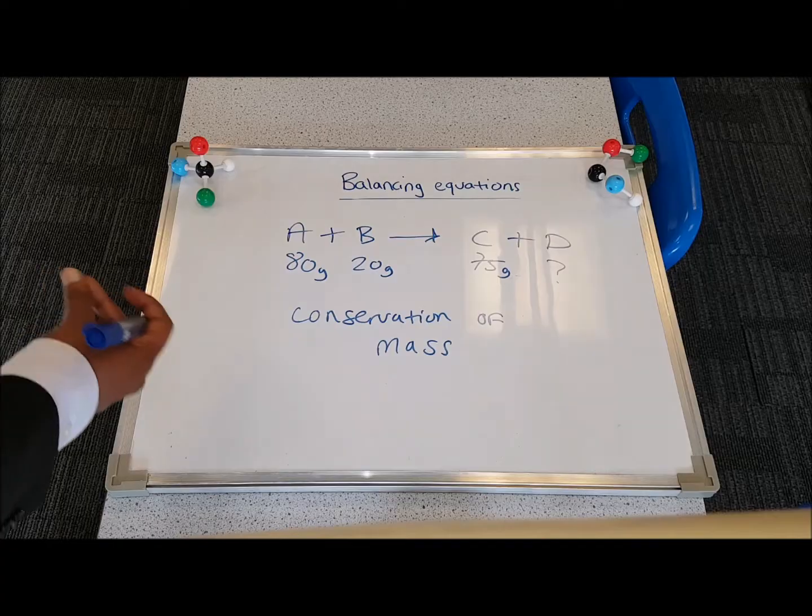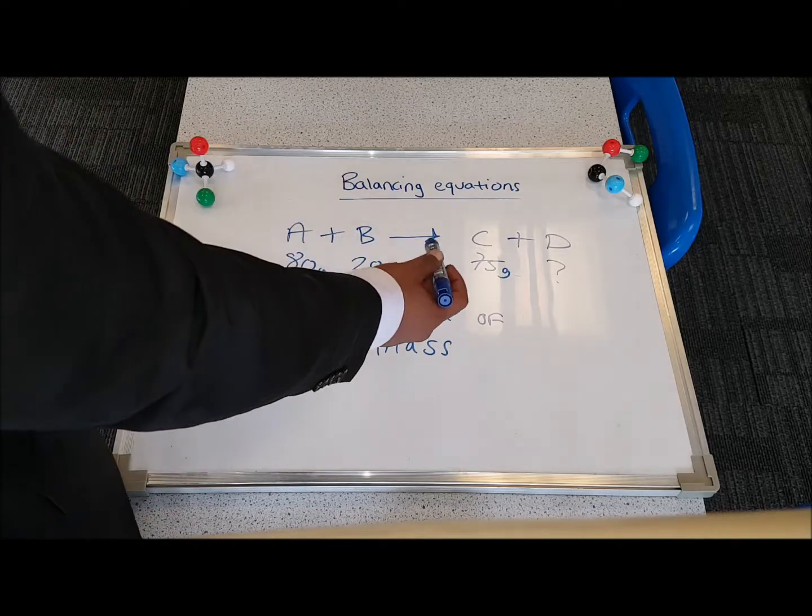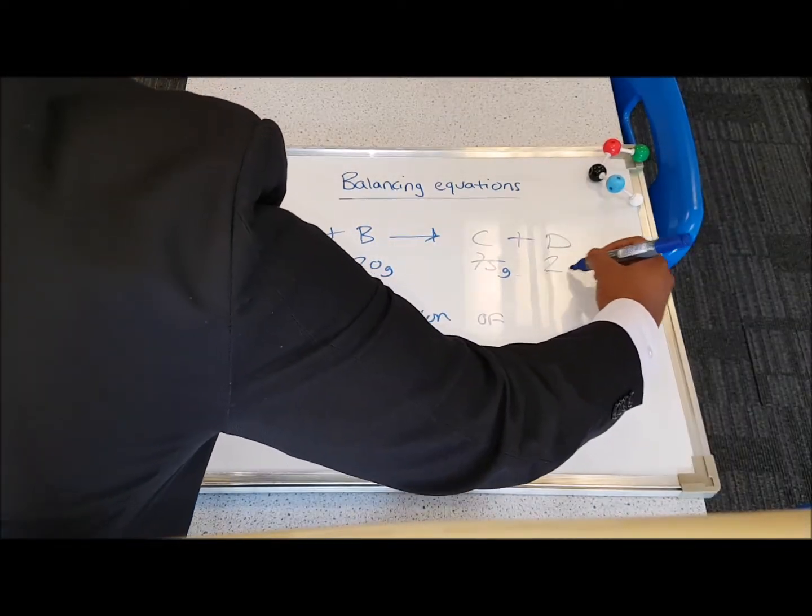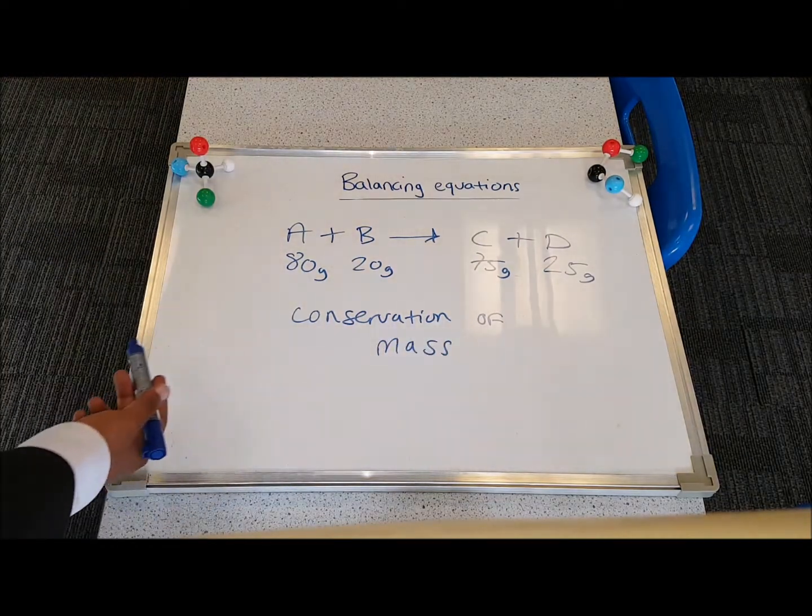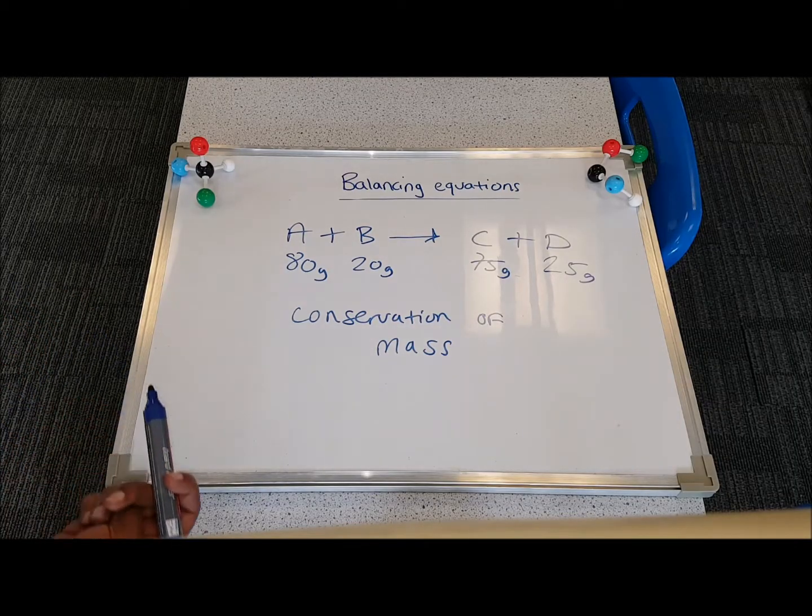Well, we know the left-hand side, the reactants, the total mass is 100 grams. C is 75 grams, so the difference between 100 grams and 75 grams is obviously 25 grams. Once again, this is because the mass of the atoms are conserved in a chemical reaction.